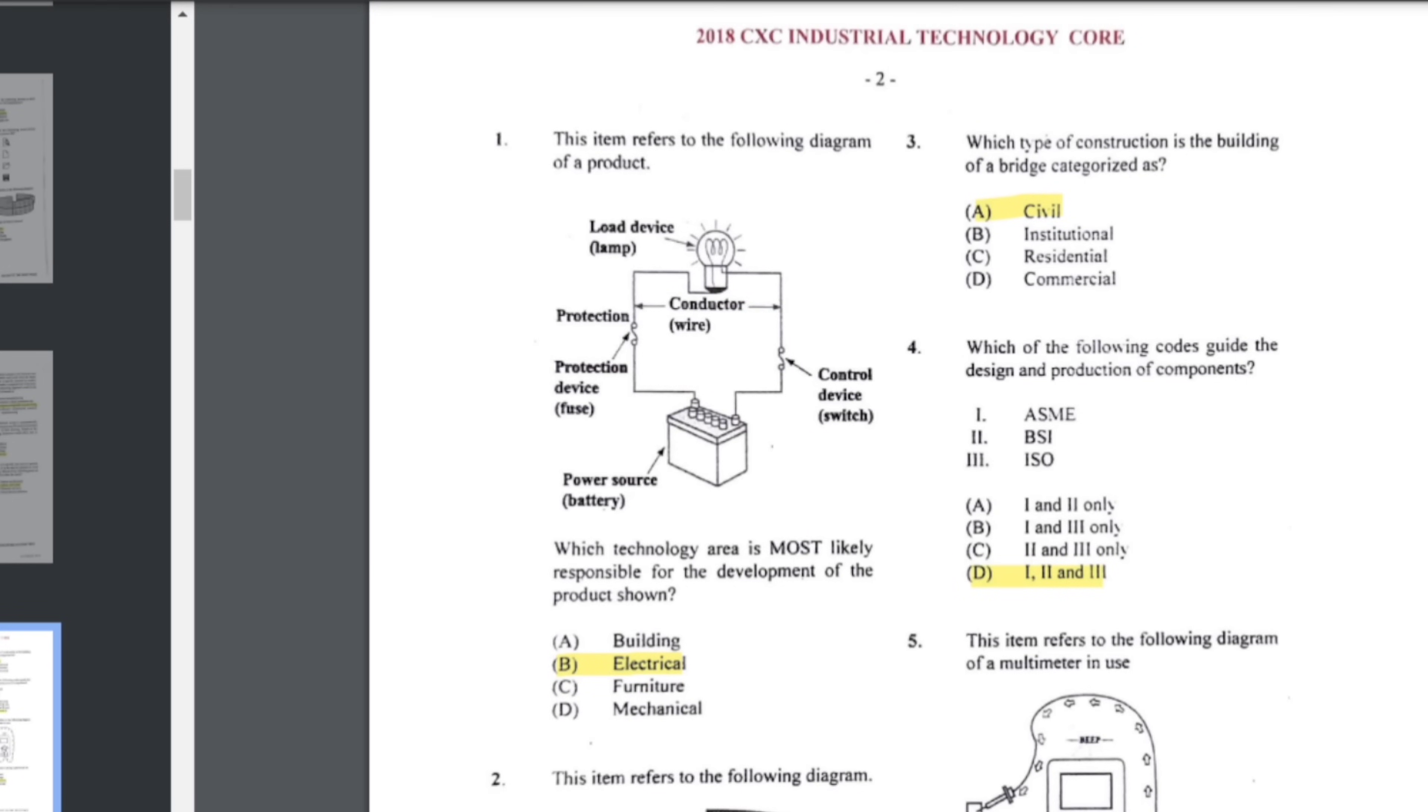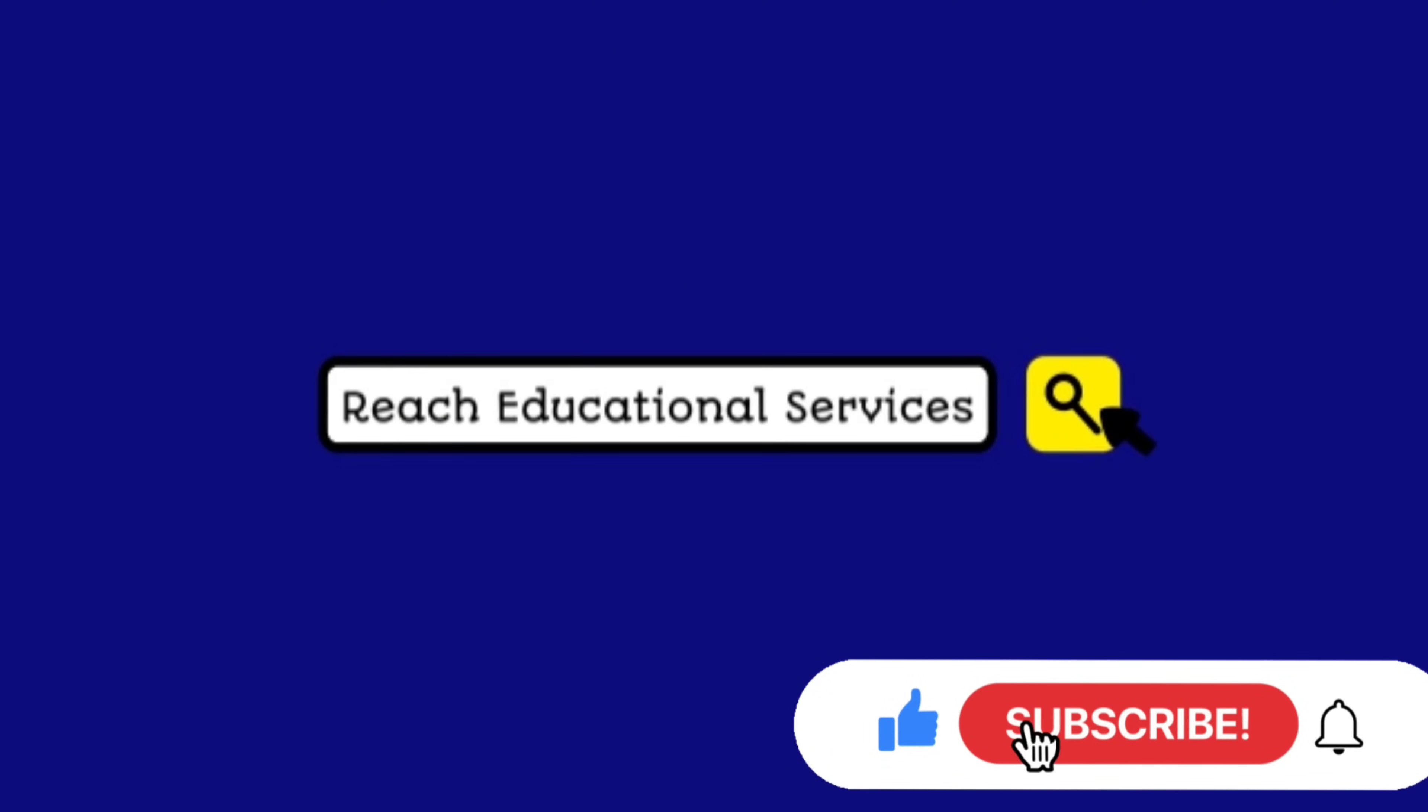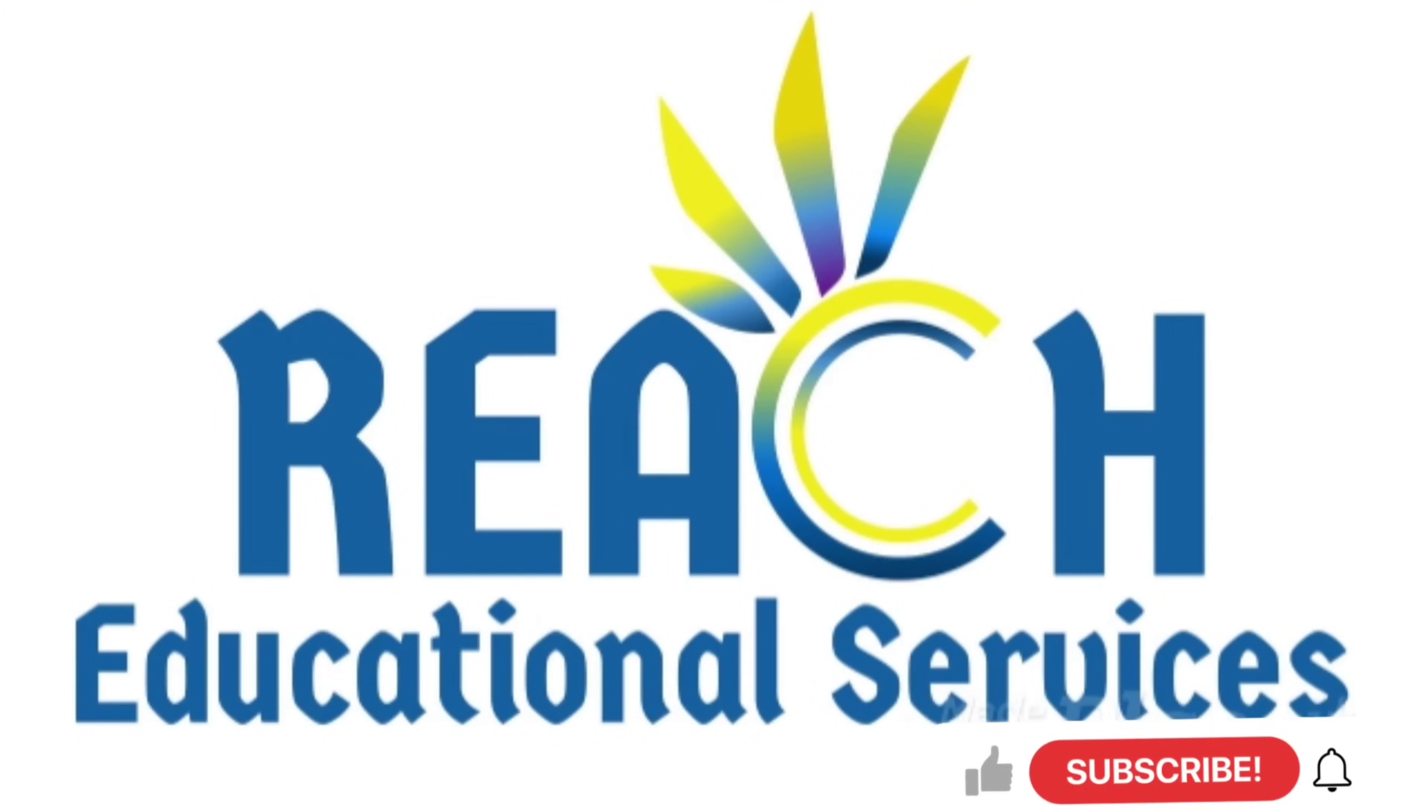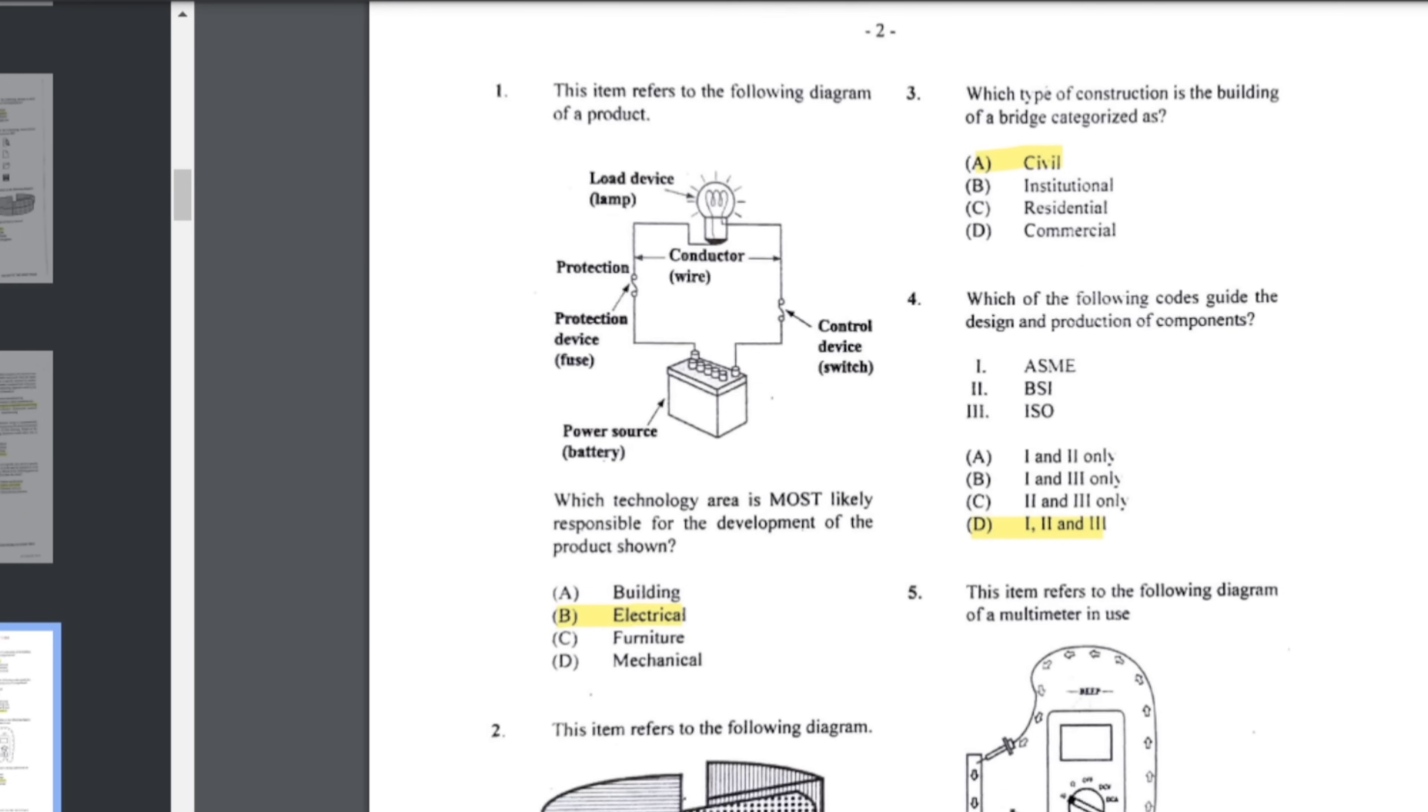Good day everyone, Mr. Cargill here with our next video. In this video we are going to be looking at the 2018 CXE Industrial Technology Paper 1 Past Paper. For the Industrial Technology past paper, whether they do mechanical, building construction, or electrical technology, you will do the same paper one. So it is 60 multiple choice questions. We have the answers here, so let's go through this and share the answers.